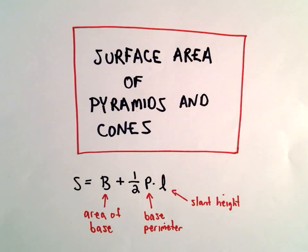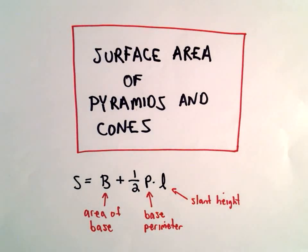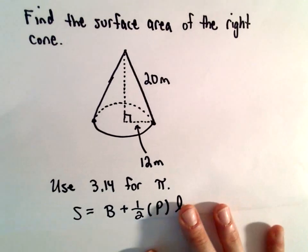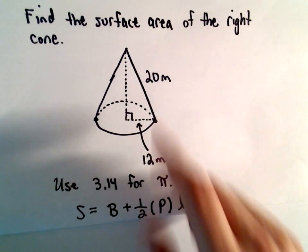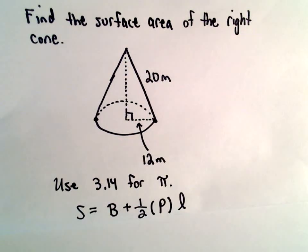Okay, here we're going to look at an example of finding the surface area of a cone. We're going to find the surface area of a right cone that has a radius of 12 meters and a slant height of 20 meters.